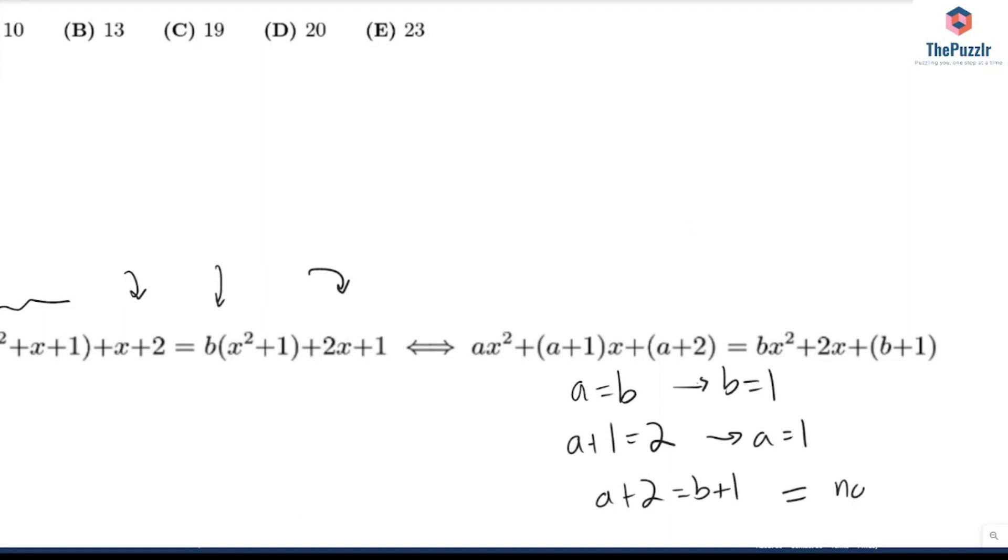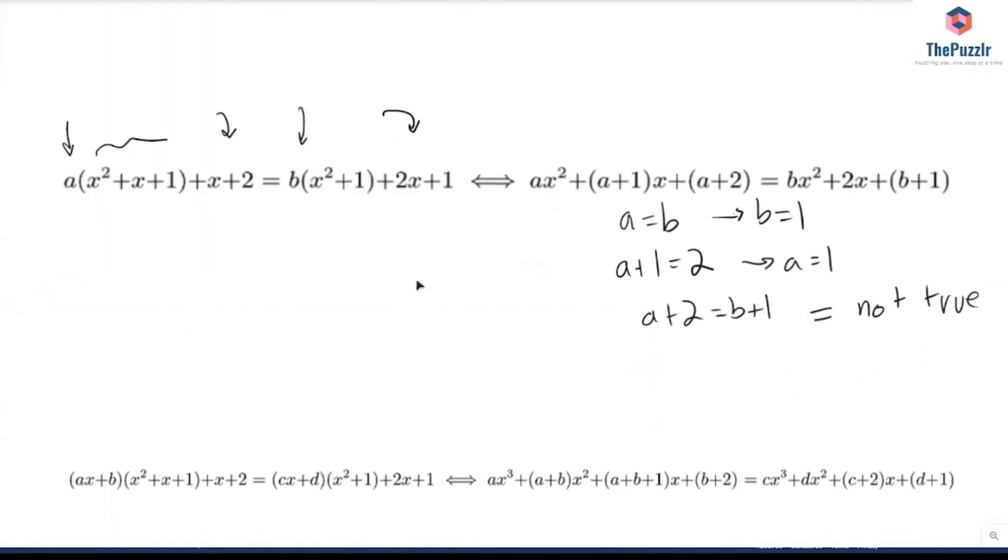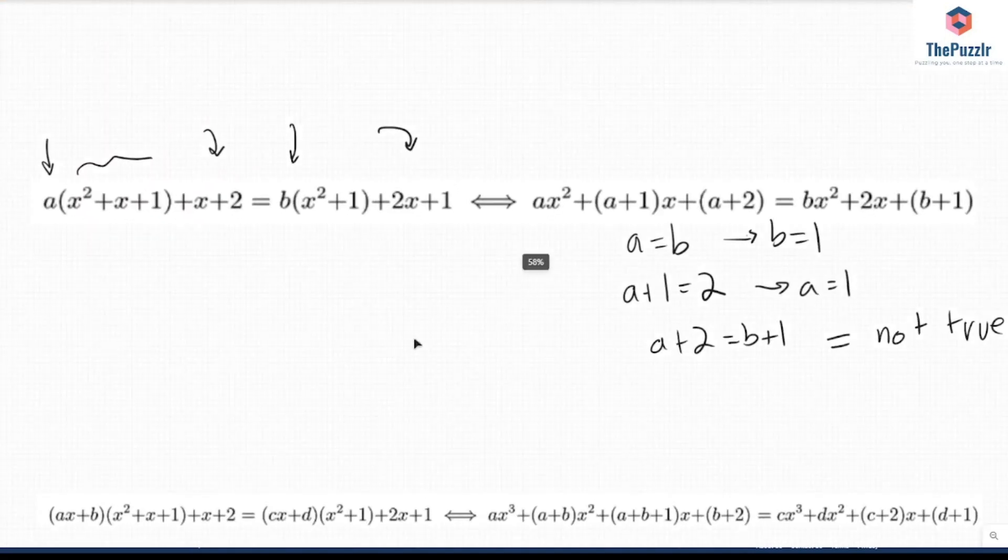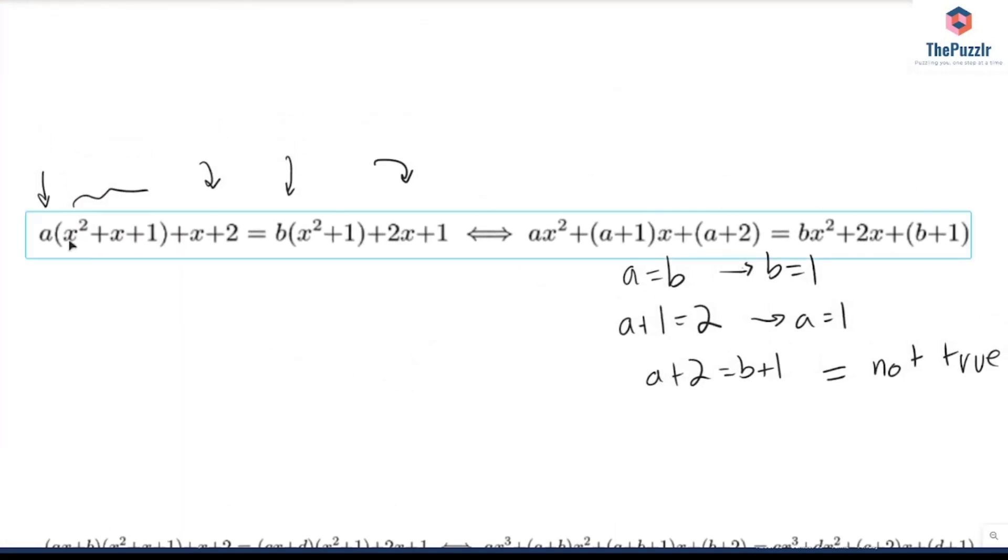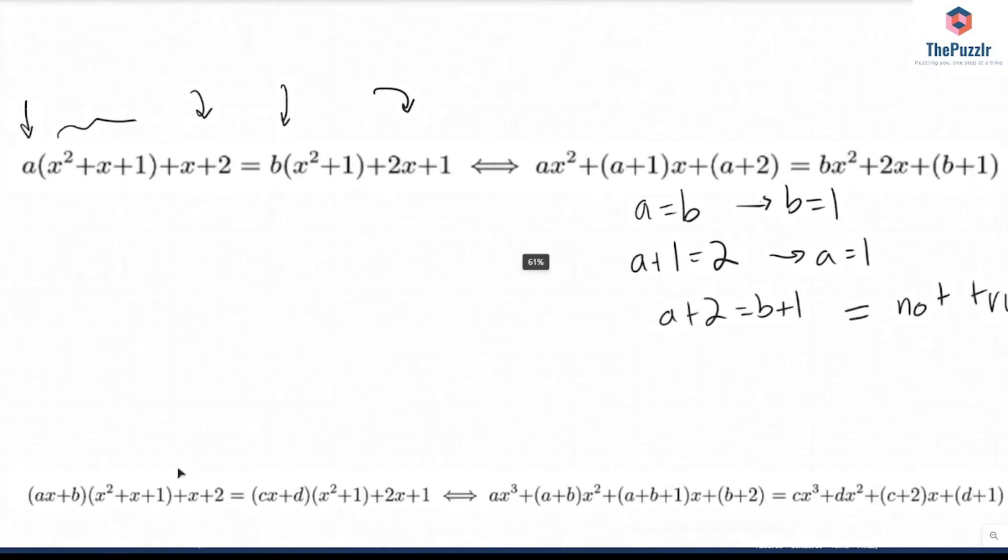And then finally a + 2 equals b + 1. Now this is not true. And since we know this is not true, we cannot have a quadratic. Let's do the same thing. Let's assume it's a cubic. That's why we can't have a quadratic function. So yeah, let's assume that our function is a cubic.